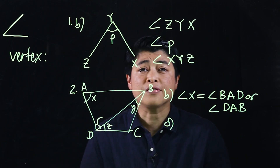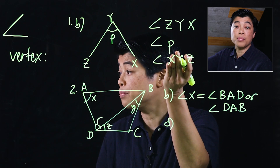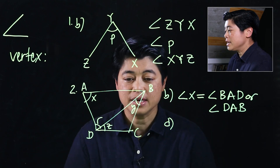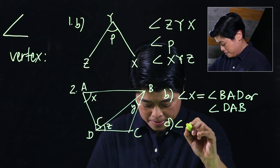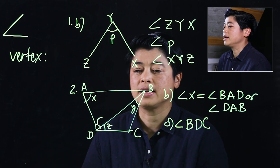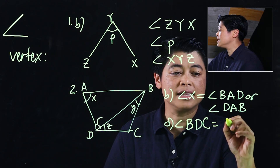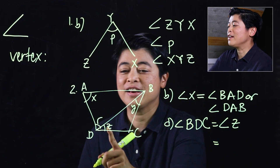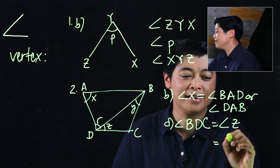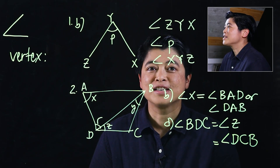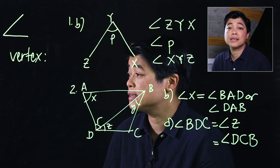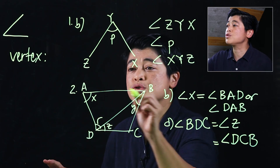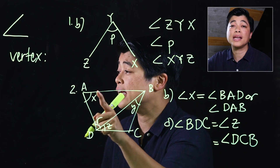There are different ways of naming angles, which is why in the first problem we named it three different ways. In letter D, angle BDC is technically the same as angle Z, and it can also be called angle CDB. Angles can be named with three letters — the points of the figure — or just one letter, which is usually a marking within the angle.